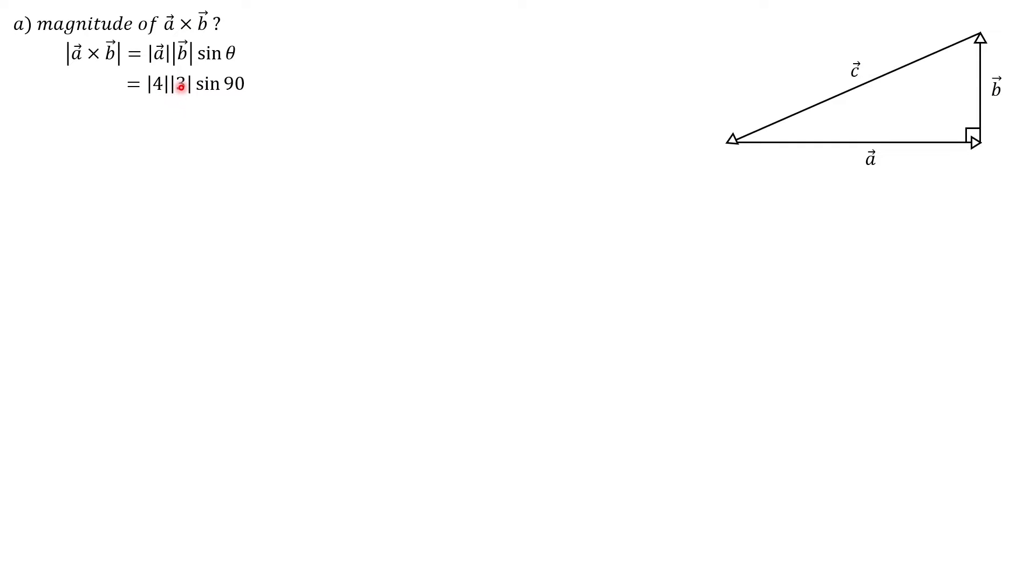So you'll see we have four times three times the sine of 90. The sine of 90 is just one, so that's four times three times one, which is going to give us 12. And that is your final answer to part A.